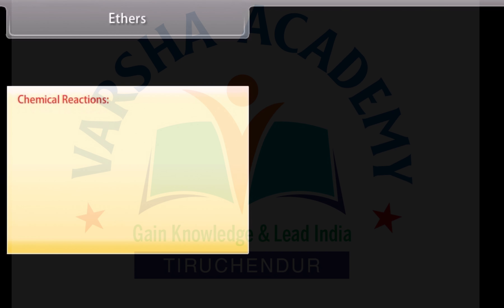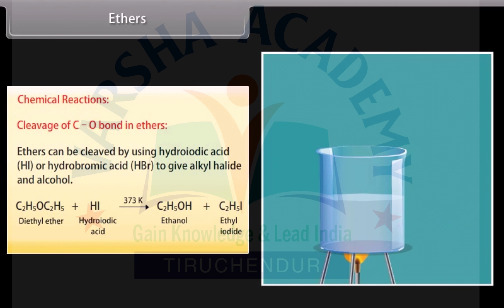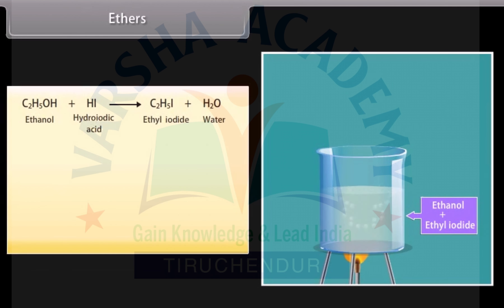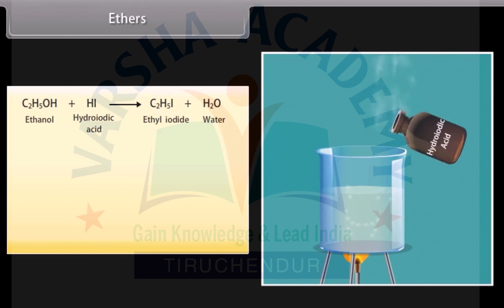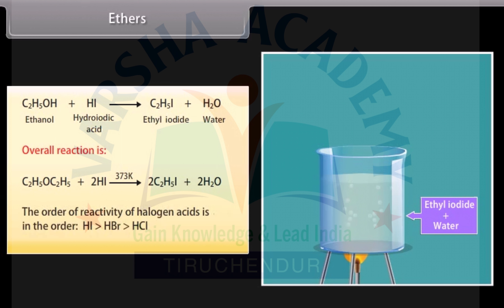Chemical reactions - Cleavage of C-O bond in ethers: ethers can be cleaved by using hydroiodic acid or hydrobromic acid to give alkyl halide and alcohol. Hydroiodic acid reacts with diethyl ether to form ethanol and ethyl iodide. With excess hydroiodic acid, the alcohol formed further reacts to form ethyl iodide. The overall reaction is: hydroiodic acid reacts with diethyl ether at 373 Kelvin to form ethyl iodide and water. The order of reactivity of halogen acids is: HI, followed by HBr, then HCl.